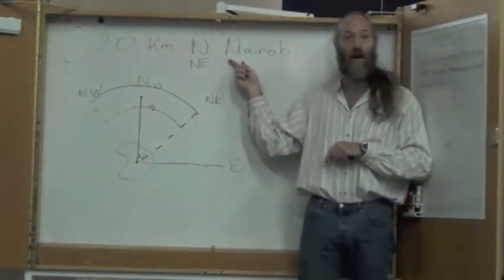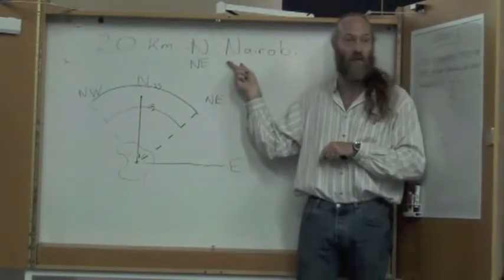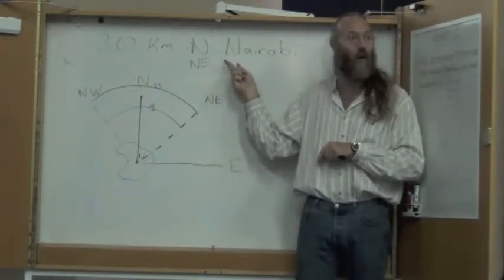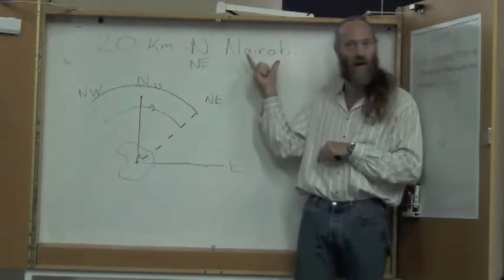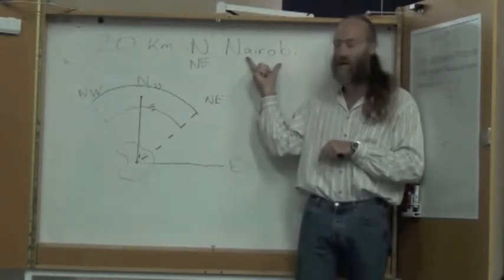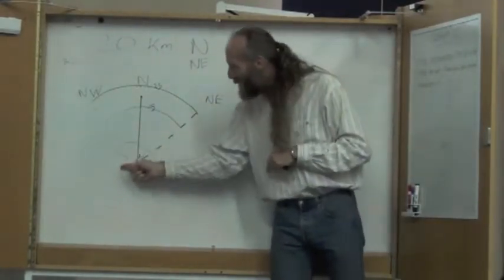You could say north of the center of Nairobi, the geographical center of Nairobi, or some location within Nairobi. Something small. Something that's much smaller than Nairobi itself. And that reduces all of this uncertainty.